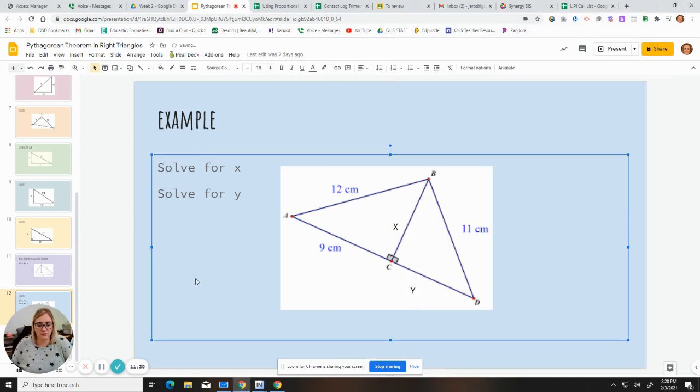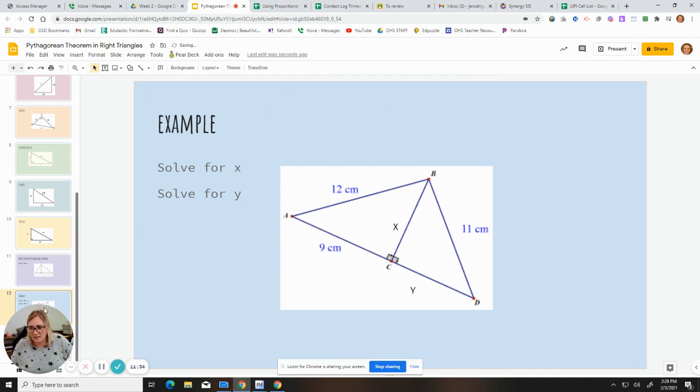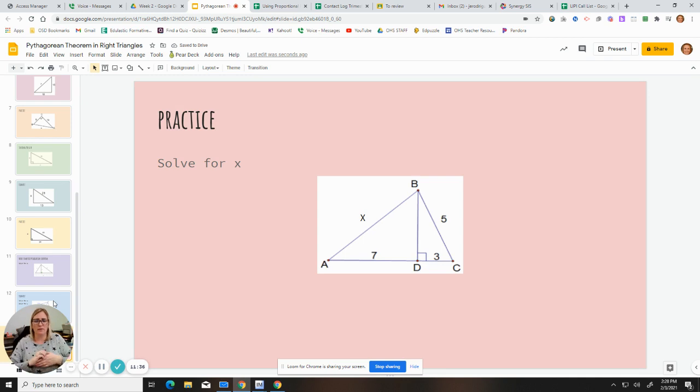So then the last one is for you guys to try. So try this one. We're just going to solve for X, but in order to solve for X, you have to find this first. So go ahead and see if you can do a two-step problem to be able to solve for X. So that is it for Pythagorean Theorem. You guys have an exit ticket today. There are three questions and you need to score a three out of three for credit.